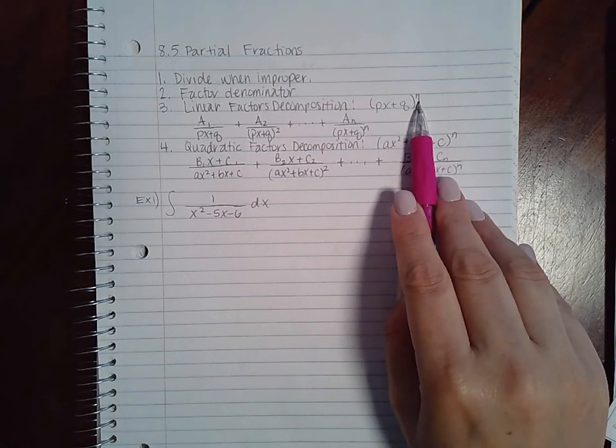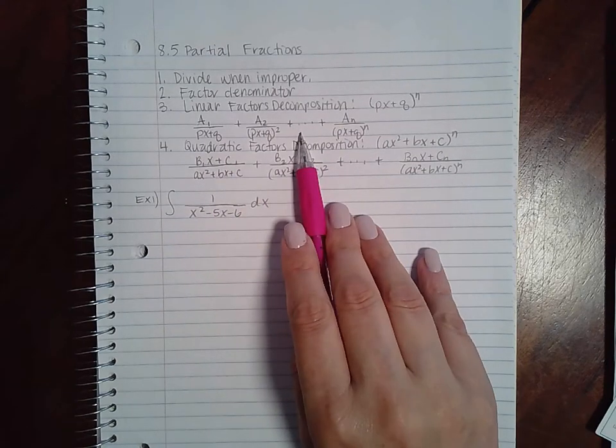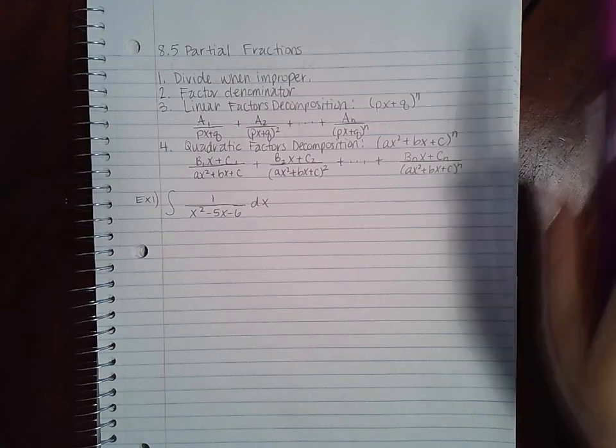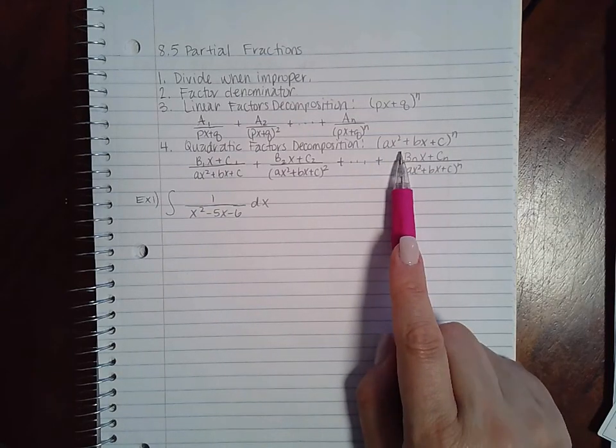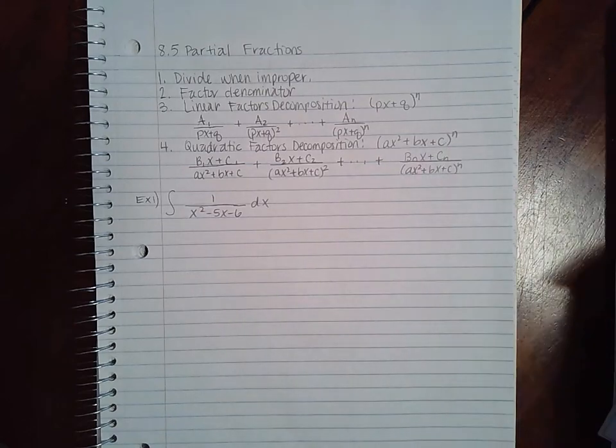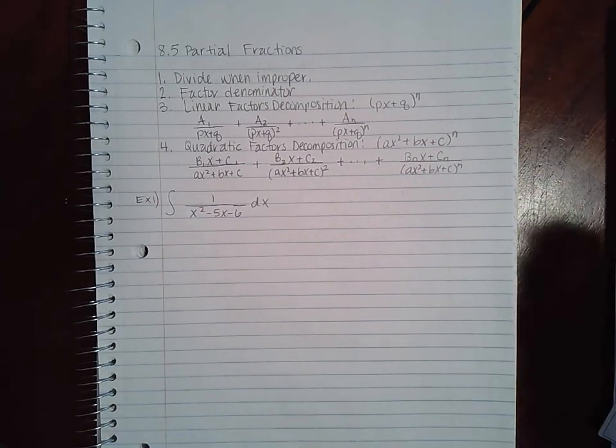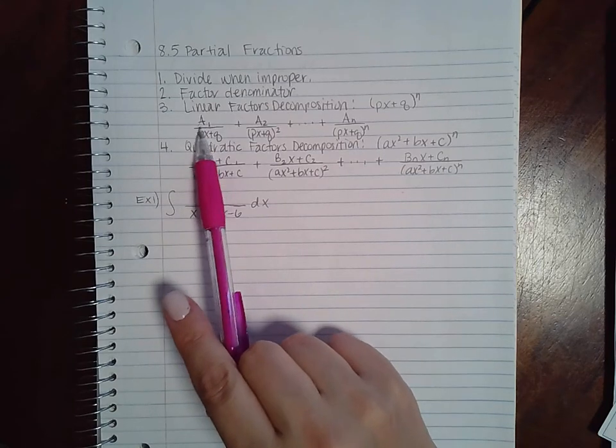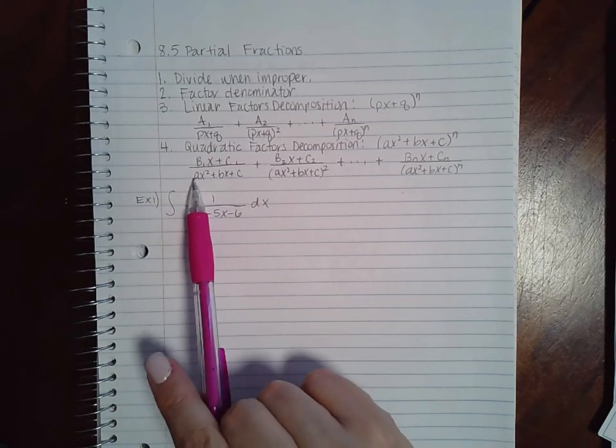The same thing goes for quadratic factors. Whatever that power is, you're going to need to have that many fractions to represent that denominator. Now notice when they're linear, all you have is a constant in the numerator. When they're quadratic at the bottom, you have a linear in the numerator.